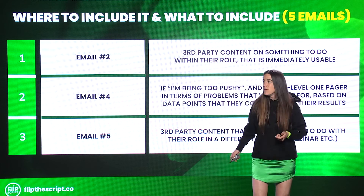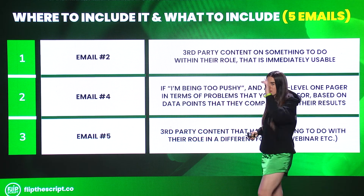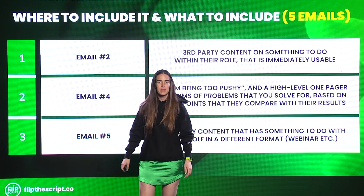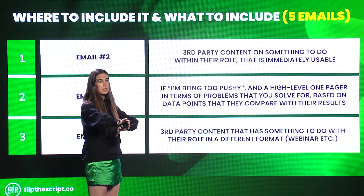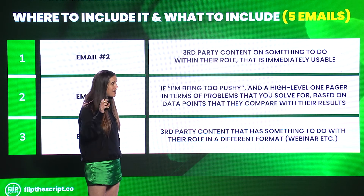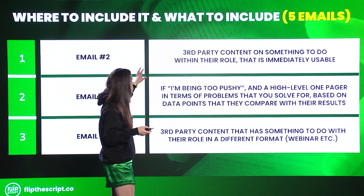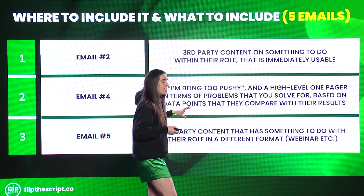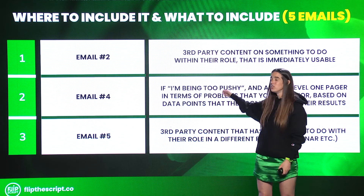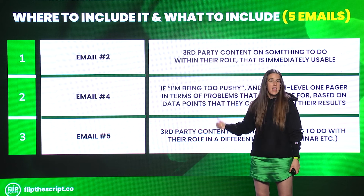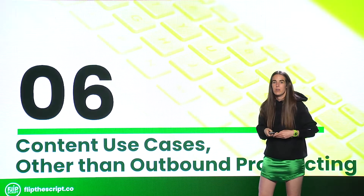So where to include content: emails two, four, and five. If you're going to do product-led content, I would do it with a pattern interrupt — in the P.S. say something like 'If I'm being too pushy and you want to check this out but don't want to be involved, I get it. Here's a one-pager on X, Y, and Z.' But email two: third-party content. Email five: third-party content. And I try to make it a different medium — if you did an article in two, do a video in five. And for email four, if you want to do product-related content, this is where I would do it.